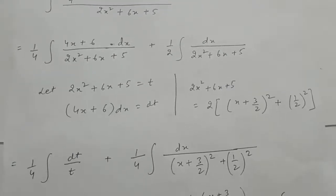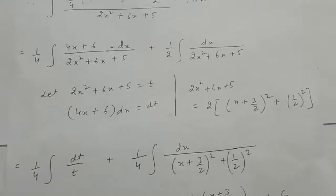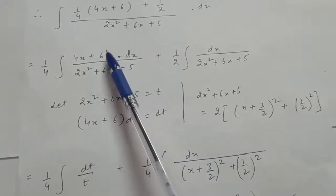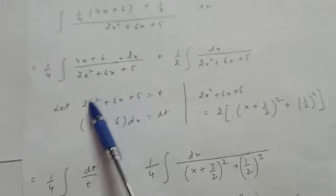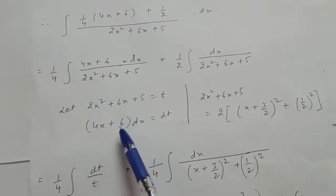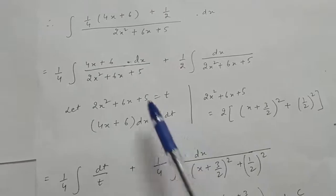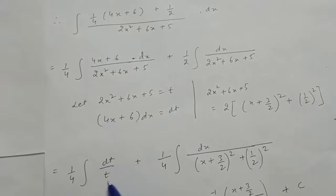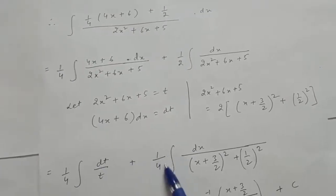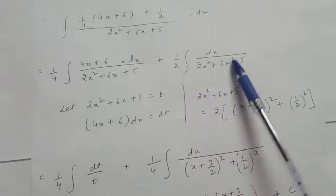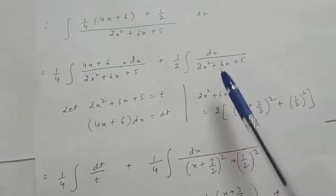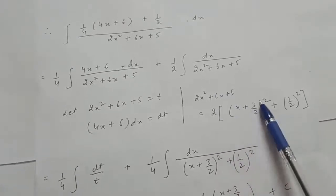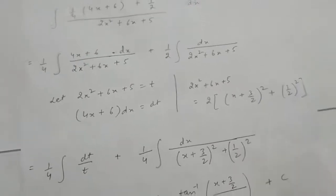For the first integral, let the denominator equal t so the numerator (4x + 6) dx equals dt. The integral becomes (1/4) integral of (1/t) dt. For the second integral, rewrite 2x² + 6x + 5 as 2[(x + 3/2)² + (1/2)²].